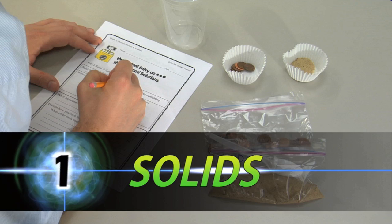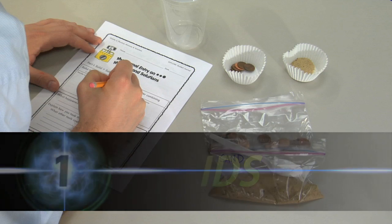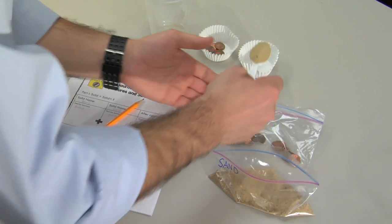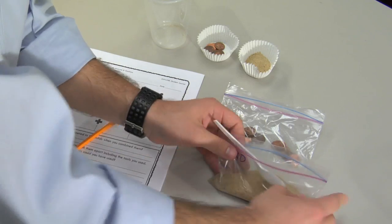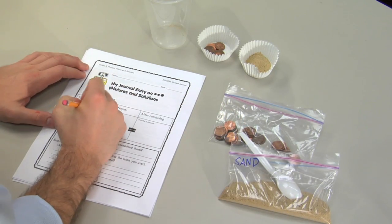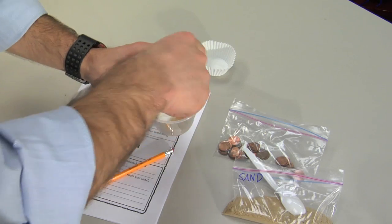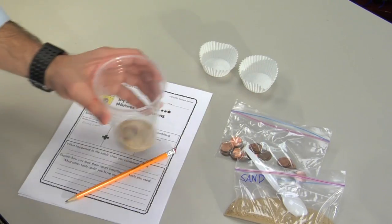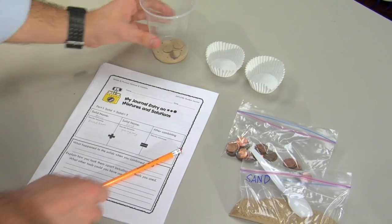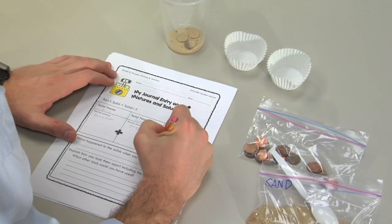Let's first explore mixing solids with other solids. Select two of the available solids and record their separate physical properties before mixing them together. Place a spoonful of each substance into a clear cup and mix. Observe and record what happens to each solid.